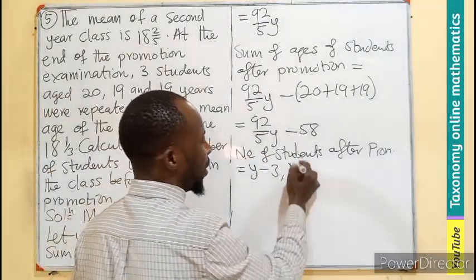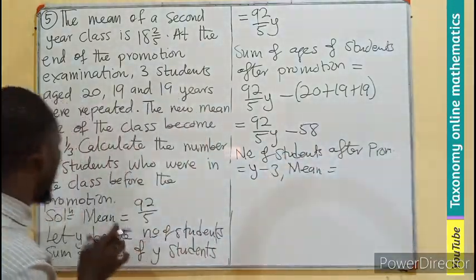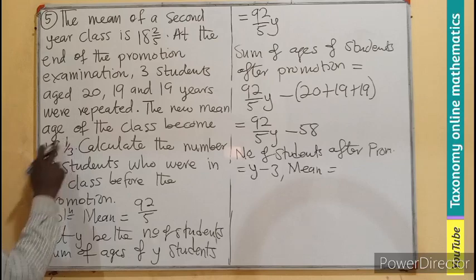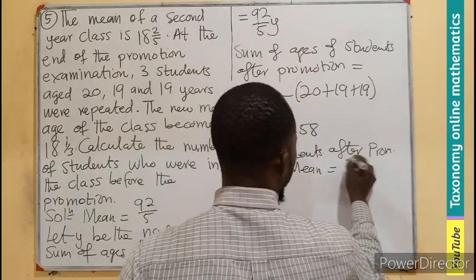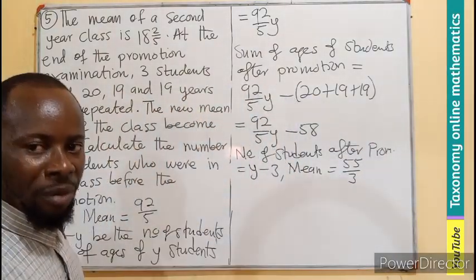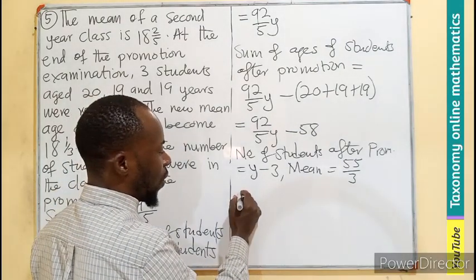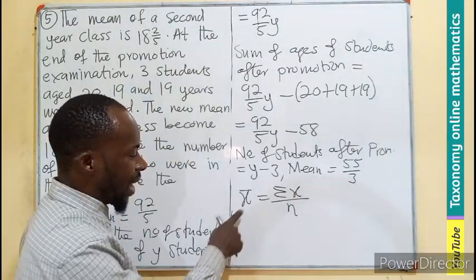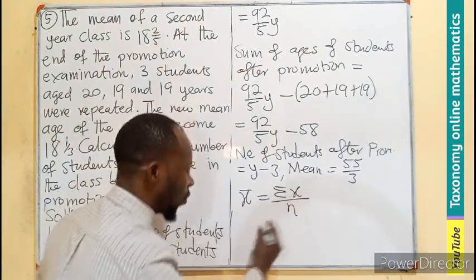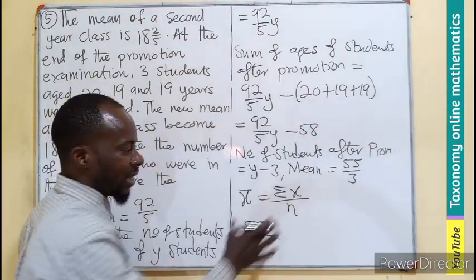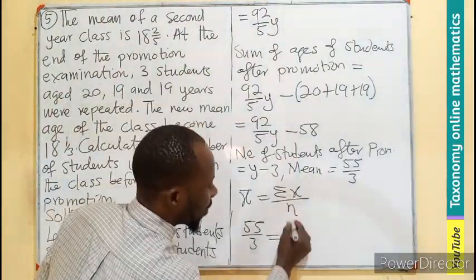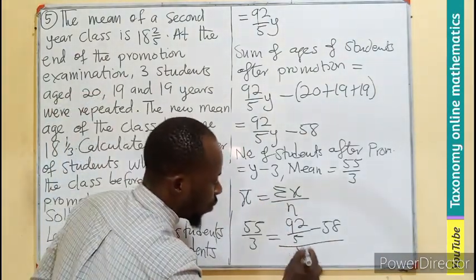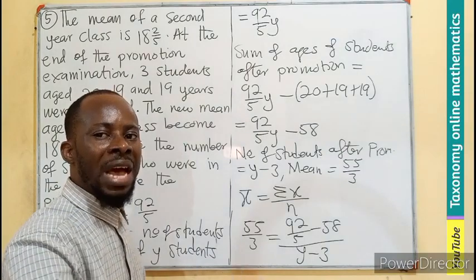Mean after promotion is also reduced to 18 times 3 plus 1, which will give us 55 out of 3. With the formula mean equals to the sum of ages over number of ages, 55 out of 3 equals to 92 out of 5Y minus 58 divided by Y minus 3. Don't forget, we are doing all this after the promotion.